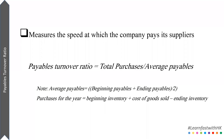The payables turnover ratio measures the speed by which a company pays its suppliers. Payables is the amount shown on the balance sheet that is yet to be paid to the suppliers — or the amount that the company owes to its suppliers. The payables turnover ratio formula is very simple: it is total purchases divided by average payables.